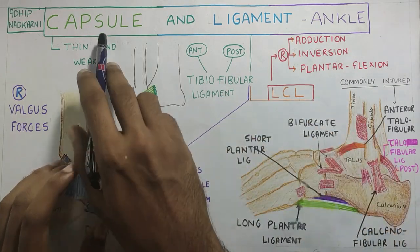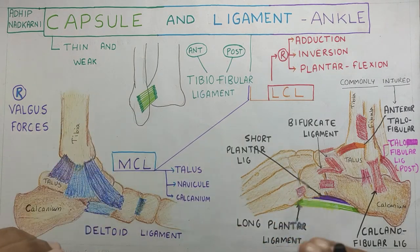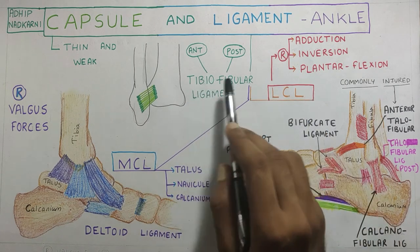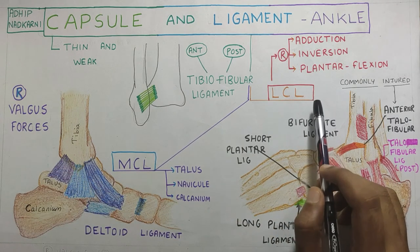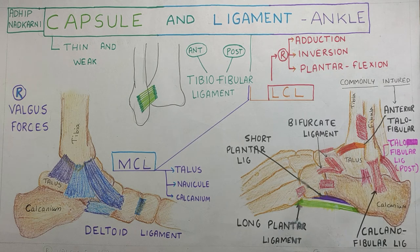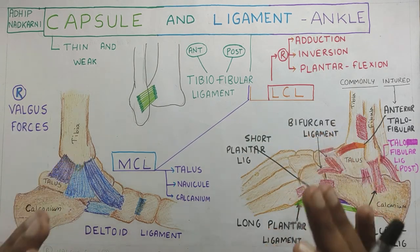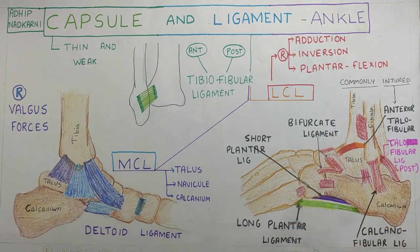Let's summarize this topic. We talked about the capsule and the ligament — the capsule covers the whole ankle joint on the lateral and medial aspect. The ligament is divided into MCL, LCL, and the tibiofibular ligament. MCL provides resistance against valgus forces, whereas LCL provides resistance against adduction, inversion, and plantar flexion. The most commonly injured ligament is the anterior talofibular ligament. Finally, the superior and inferior peroneal retinaculum and the superior and inferior extensor retinaculum, along with the collateral ligaments, provide stability to the subtalar joints.